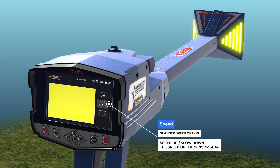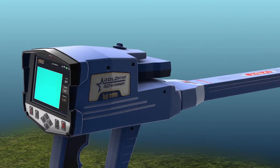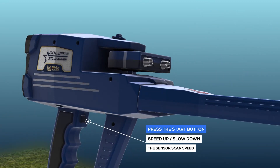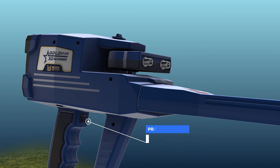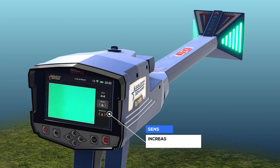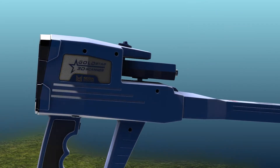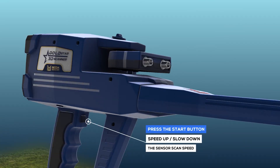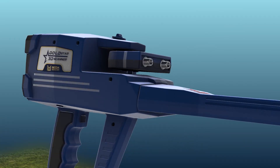The second box is Speed — use the Scanner Speed option to speed up or slow down the sensor scan. Any change in speed will prompt the user to press the Start button to apply the new changes. The third box is Sensitivity — use the Sensitivity option to increase or decrease the sensitivity of the search sensor. Any change in sensitivity will also ask the user to press the Start button to apply.